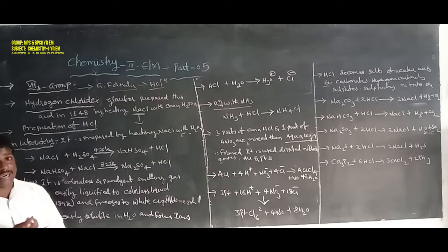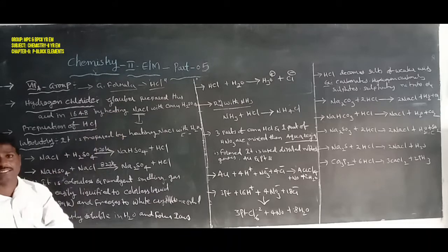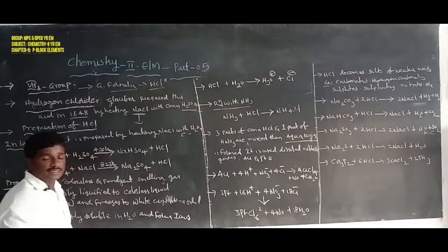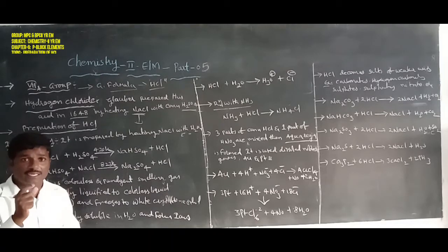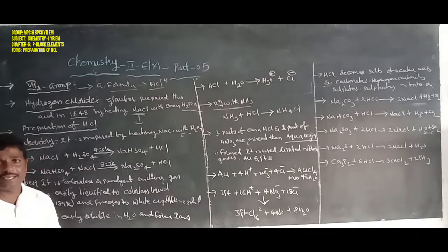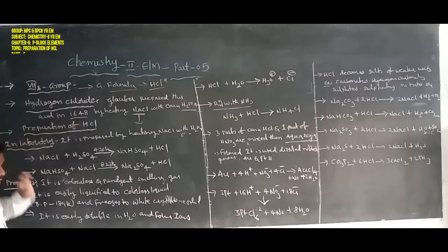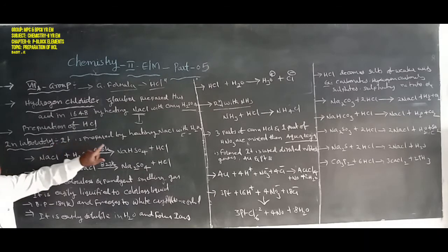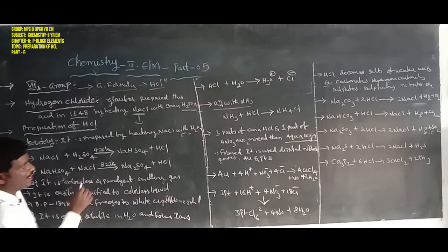Glauber prepared hydrochloric acid by combining or heating common salt with concentrated sulfuric acid (H2SO4). By heating common salt, also known as sodium chloride, with concentrated sulfuric acid, hydrochloric acid or hydrogen chloride is formed.